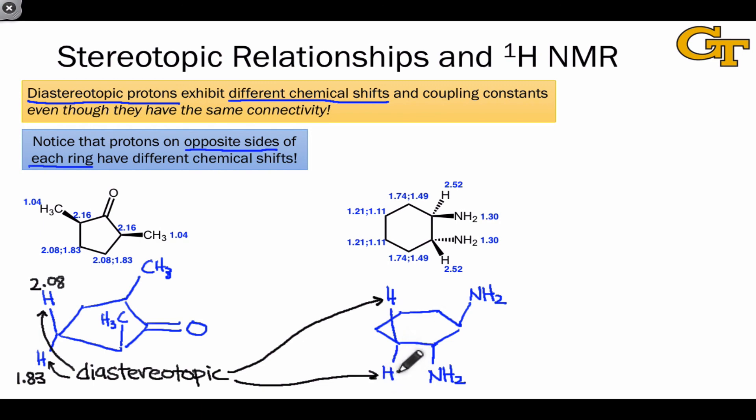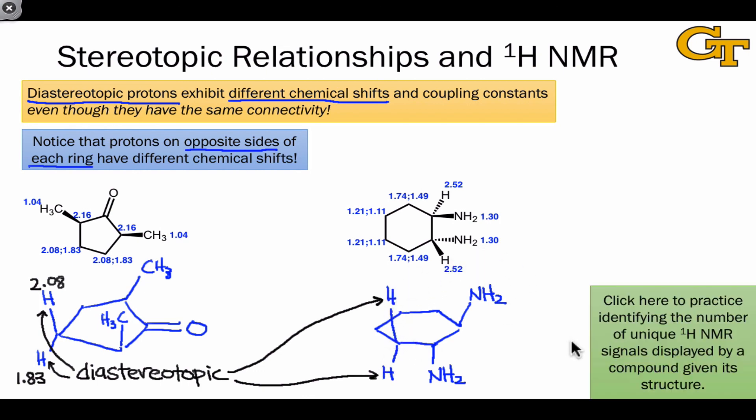It's clear, for example, that this proton is closer to this NH2 group than this proton is. This difference in internal distance alone is enough to suggest that these hydrogens are in different electronic environments and should have different chemical shifts. If you want more practice with this, the website linked here is a great resource for practicing identifying the number of unique NMR signals within a structure, which involves determining some of these pairwise stereotopic relationships to determine which hydrogens are truly unique and which aren't.